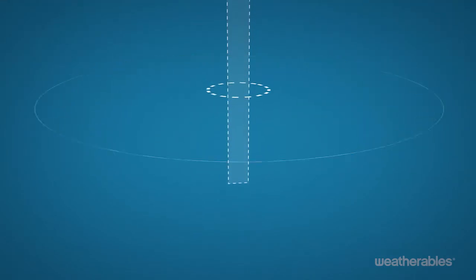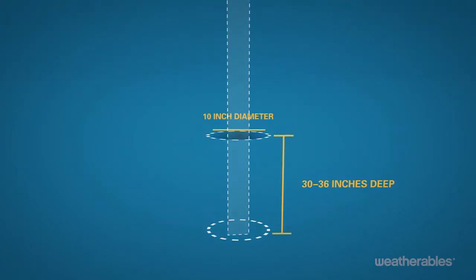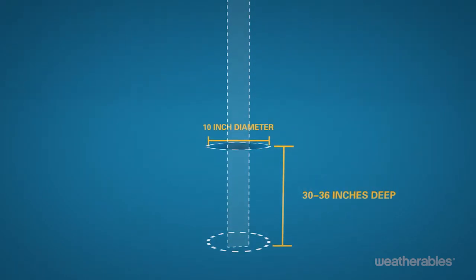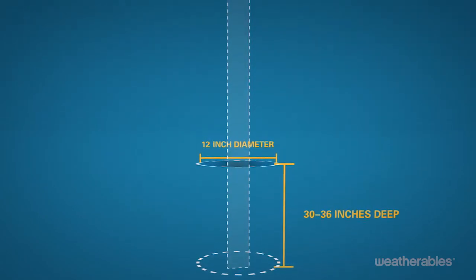After marking the locations of your fence posts, begin digging the post holes for the panels. The holes should be 30 to 36 inches deep and 10 inches in diameter for four by four inch posts and 12 inches in diameter for five by five inch posts.